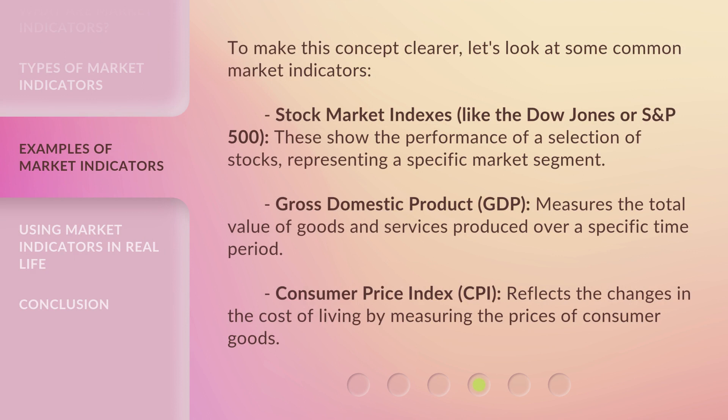To make this concept clearer, let's look at some common market indicators. Stock market indexes, like the Dow Jones or S&P 500, show the performance of a selection of stocks representing a specific market segment. Gross Domestic Product, GDP, measures the total value of goods and services produced over a specific time period. Consumer Price Index, CPI, reflects the changes in the cost of living by measuring the prices of consumer goods.